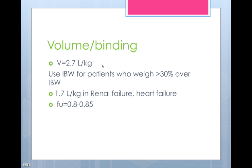Back to procainamide now. The volume of distribution is about 2.7 liters per kilogram — not as big as digoxin, but certainly not small either; it's on the large side. Again, we use ideal body weight for patients who weigh greater than 30% over their ideal body weight. The volume decreases in renal failure and also decreases in heart failure, probably because of binding changes. As you can see, it's not highly bound in the plasma — it's more highly bound in the tissue, which is what we would expect from this volume of distribution. The changes are probably in tissue binding in renal failure and heart failure.